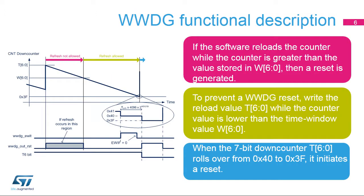This diagram illustrates how the window watchdog operates. When the 7-bit down-counter rolls over from 0x40 to 0x3F, the watchdog asserts the reset. This happens if the application software does not refresh the window watchdog on time. The Early Wake-Up Interrupt, or EWI, if enabled, can be generated when the down-counter reaches 0x40.